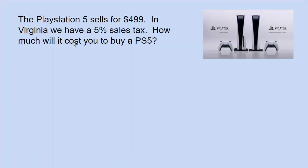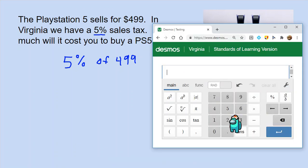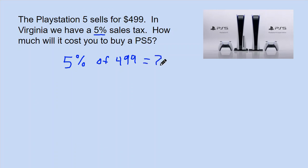Let's do one more example. The PlayStation 5 sells for $499. In Virginia, we have a 5% sales tax. How much will it cost you to buy a PS5? We need our percent — 5% — and we find 5% of the original price of $499. Using the Desmos calculator, 5% of $499 gives me $24.95.